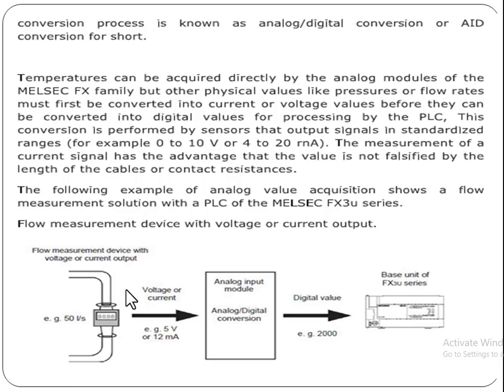In summary, analog input modules are used to convert analog values into digital values that are understandable by PLCs. Input modules read three types of values: current, voltage, and temperature. Output modules read only two types of values: current and voltage. This has been a brief description of the analog input module used in the Mitsubishi PLC series.